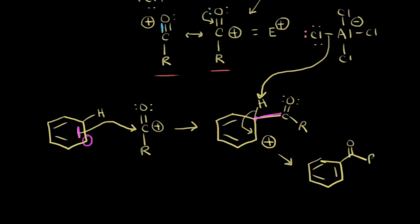Following the electrons: the electrons in green move back into the ring to restore aromaticity. The electrons in red bond to the proton, forming HCl as a byproduct. We also regenerate our catalyst, AlCl₃. So we've formed our product — we've installed an acyl group on our benzene ring. That is Friedel-Crafts acylation.